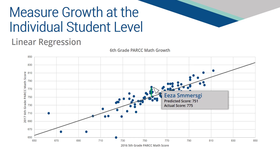Once we have a projected score, we can measure how far a student's actual score is from their projected score derived from the linear regression. The distance between a student's projected score and their actual score provides the raw metric to express student growth. This particular example represents a student who showed higher than expected growth, as their score is above the linear regression line.